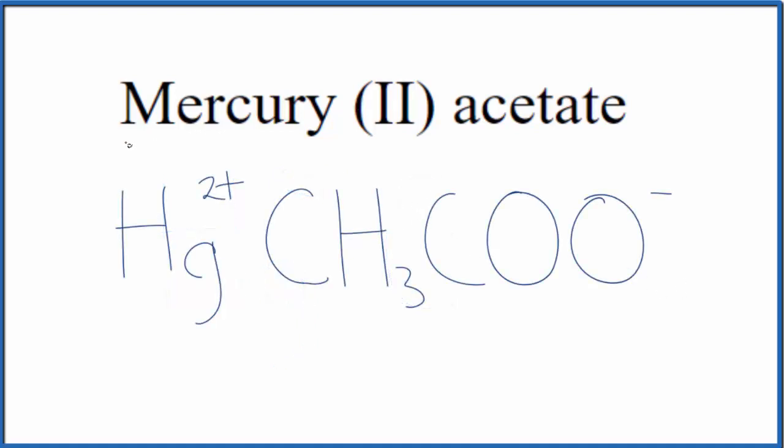So because mercury(II) acetate is a neutral compound—it doesn't say ion after it—the charges need to balance. They need to add up to zero. So the negative here, it's on the whole acetate ion. So we have 2+, 1-.